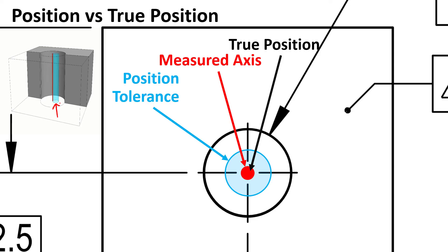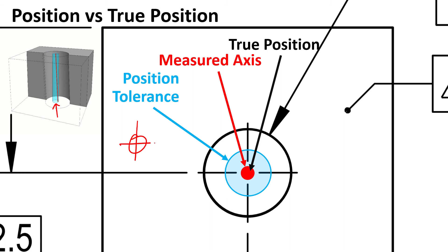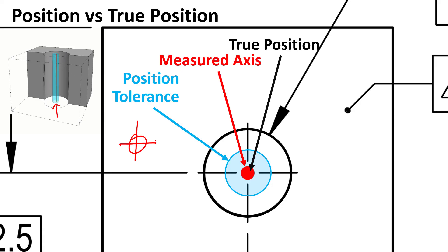Thanks for tuning in today. Hopefully I clarified the difference between true position and position. I know most of the industry calls this symbol 'true position,' and that's totally fine, but you should know the difference between true position and the position tolerance — because they are two different chapters of the same story. I just want to make sure everybody knows what we're talking about when we reference true position in our course versus the position tolerance.